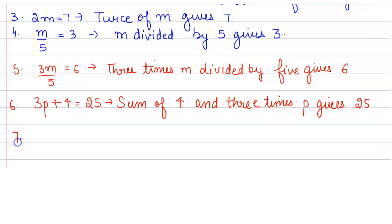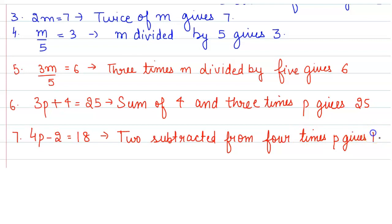Then in seventh part you have 4P minus 2 is equals to 18. So you can write it as 2 subtracted from 4 times P gives 18.